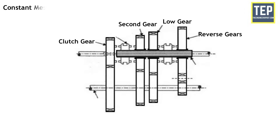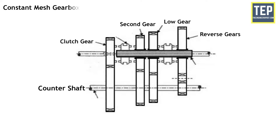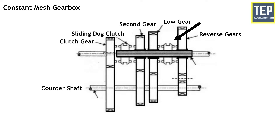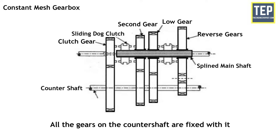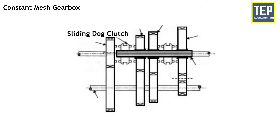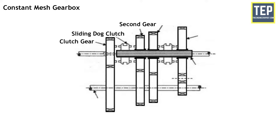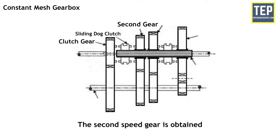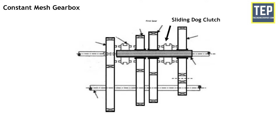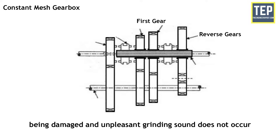In the constant mesh gearbox, all the gears of the main shaft are in constant mesh with the corresponding gears of the counter shaft. One sliding dog clutch is placed between the clutch gear and the second gear, and the other is placed between the first gear and reverse gear. All gears are free on the splined main shaft, and the dog clutch slides on the main shaft to rotate with it. When the left-hand dog clutch slides to the left, it meshes with the clutch gear and top speed is achieved. When it meshes with the second gear, second speed is obtained. Similarly, by sliding the right-hand dog clutch left and right, first gear and reverse gear are obtained. In this gearbox, all gears are in constant mesh, so they are safe from damage and no unpleasant grinding sound occurs while engaging and disengaging them.